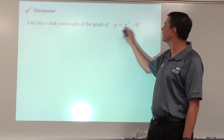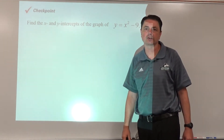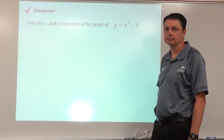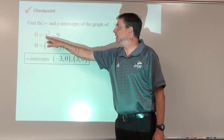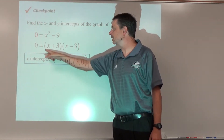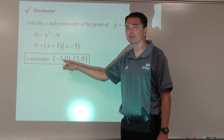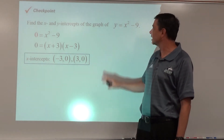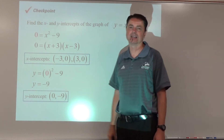Checkpoint: here's our equation — pause the video and find the x and y intercepts. Setting y = 0, this is a difference of squares factoring pattern: (x + 3)(x - 3). That gives x-intercepts of (-3, 0) and (3, 0). Substituting x = 0 for the y-intercept, we get y = -9, so the y-intercept is (0, -9).